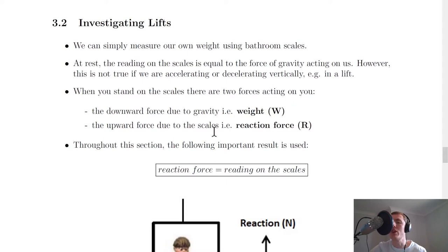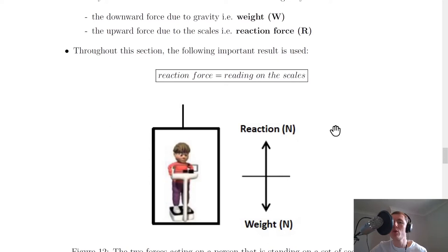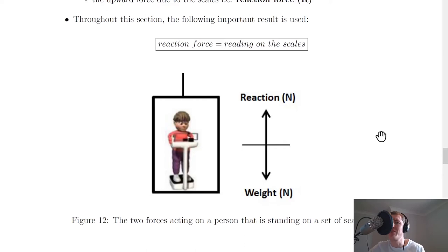Newton's third law involves a Newton pair of forces — weight acts downwards on you and the reaction force acts back up on you. An important result we'll use throughout is that the reaction force R is equal to the reading on the scales. When you're standing on scales outside a lift, or when the lift is stationary, the reaction force upwards balances the weight downwards.